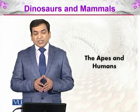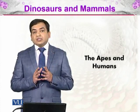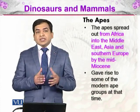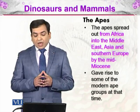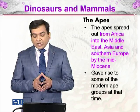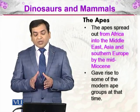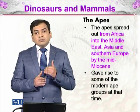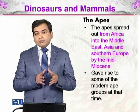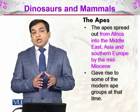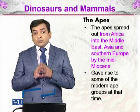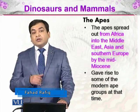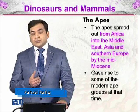In the dinosaurs and mammals, we will be discussing about the apes and humans. We have discussed that apes were ancestors of the human. The apes spread out from Africa into the Middle East, Asia, and Southern Europe by the mid-Miocene, giving rise to some of the modern ape groups at that time. Some of those apes living further apart gave rise to new species, new groups, and new clades — one of which gave rise to the humans as well.